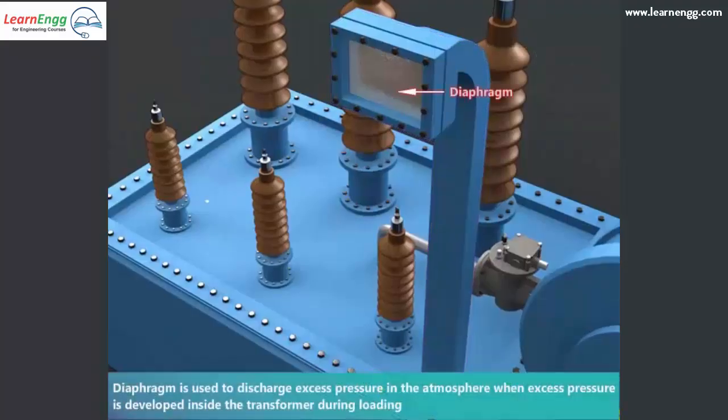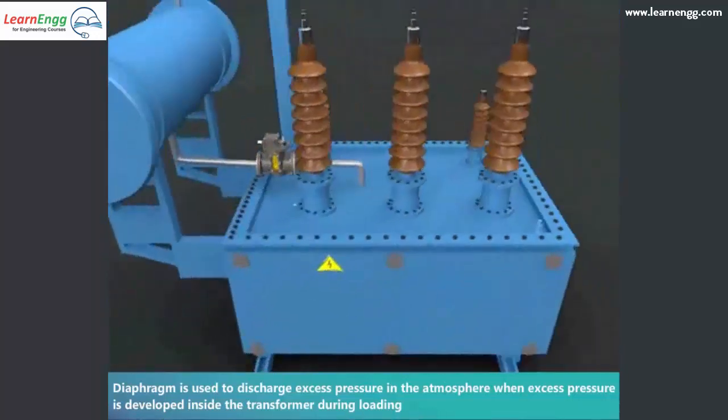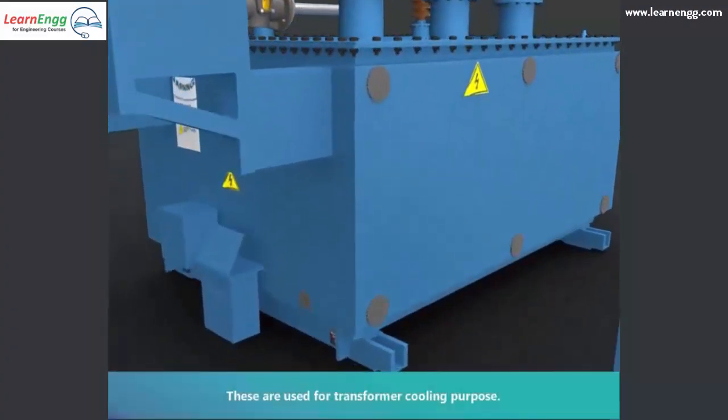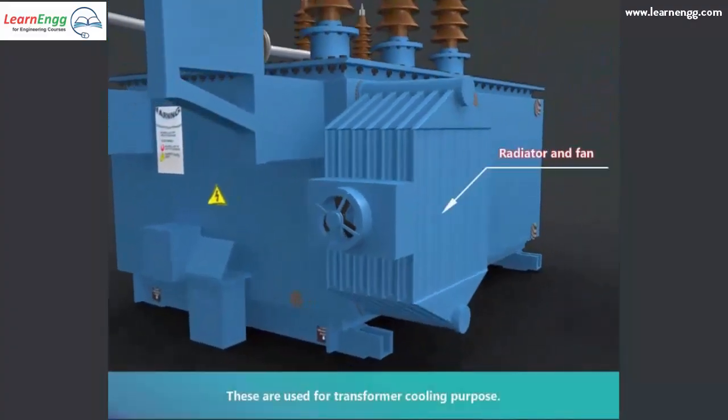Diaphragm is used to discharge excess pressure in the atmosphere when excess pressure is developed inside the transformer during loading. These are used for transformer cooling purpose.